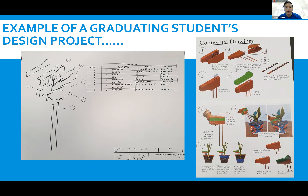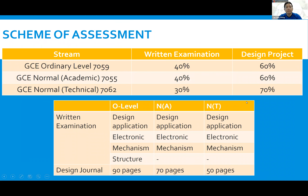Let's look at the scheme of assessment for the various streams. While learning objectives remain largely similar across all three streams, requirements are slightly different. The percentage for written papers is 40% for O-level and NA, and 30% for NT. For NA and NT, students only need to cover two technology chapters compared to three in O-level. The page limit for coursework is 90 pages for O-level, 70 pages for Normal Academic, and 50 pages for Normal Technical.